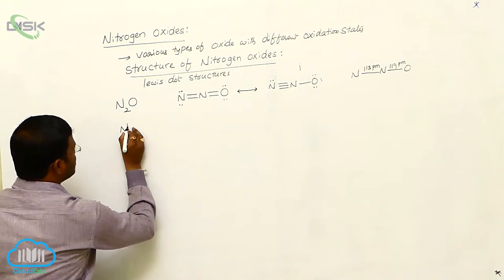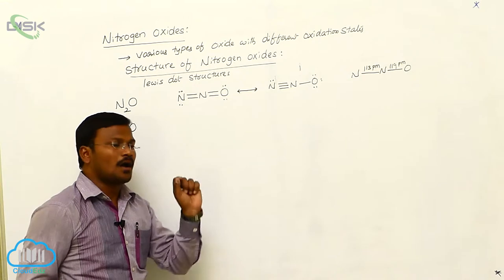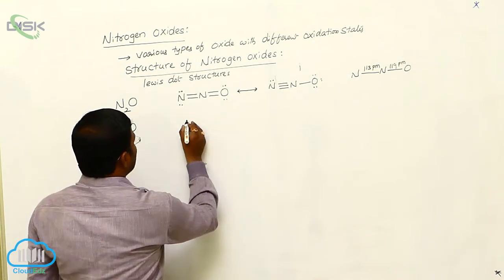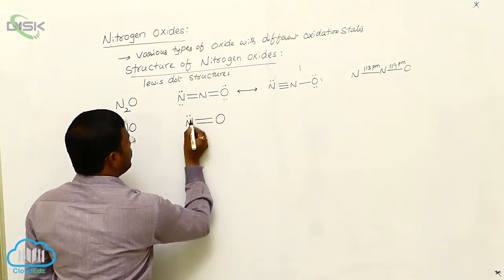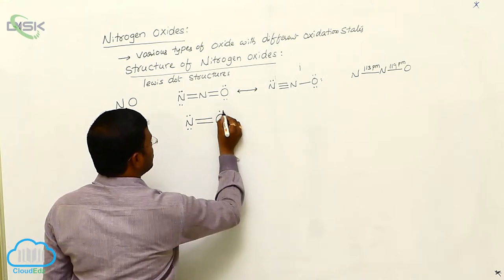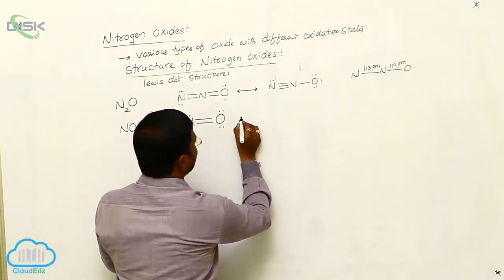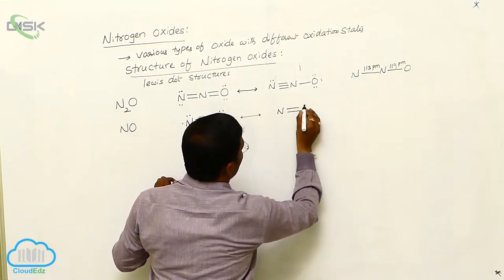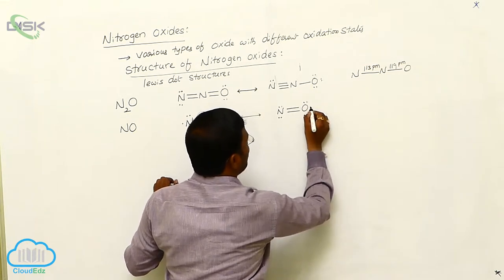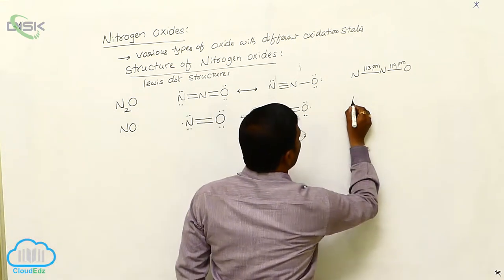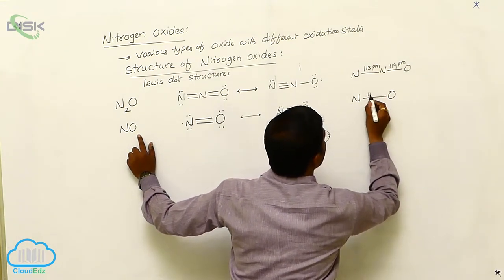The next oxide is nitric oxide, also called nitrogen monoxide or nitrogen 2 oxide. The structure of nitrogen monoxide is N double bond O, in which nitrogen has two non-bonding pairs of electrons and oxygen has two non-bonding pairs of electrons, with one additional single unpaired electron present on nitrogen. It can also be represented as N double bond O where nitrogen has two non-bonding pairs and oxygen has two pairs followed by a single unpaired electron on the oxygen side.